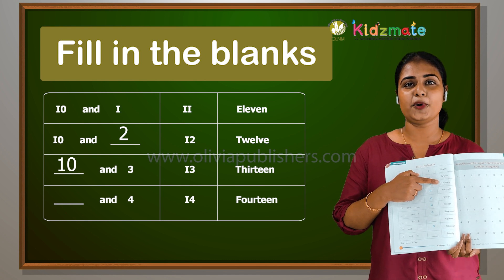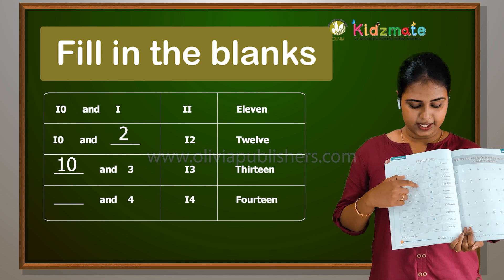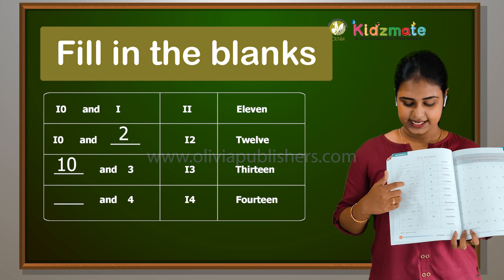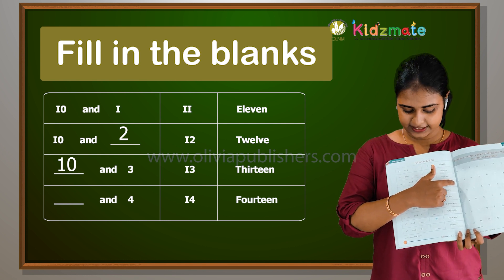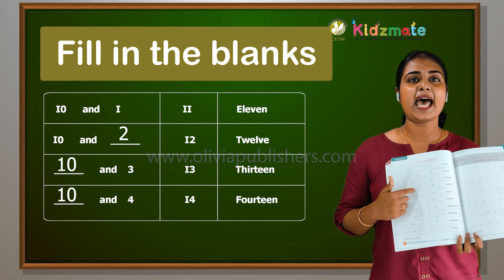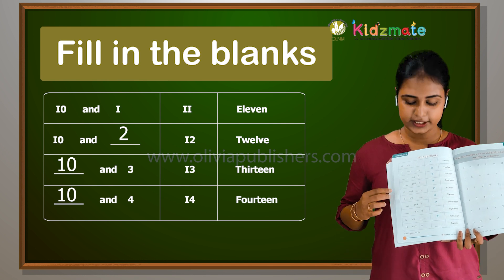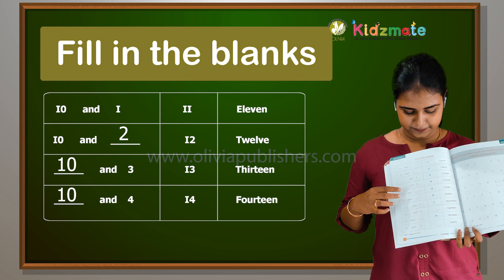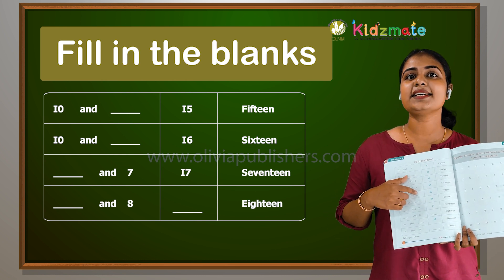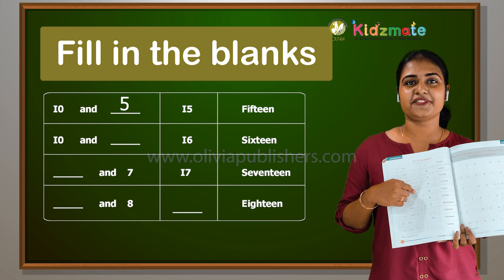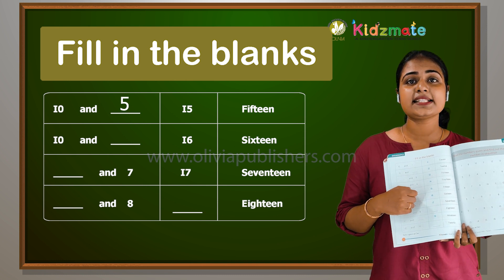Number and number name. Ten and one — fourteen. Ten and five equals fifteen. Ten and dash equals sixteen.